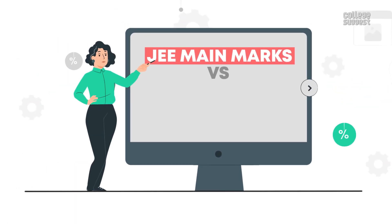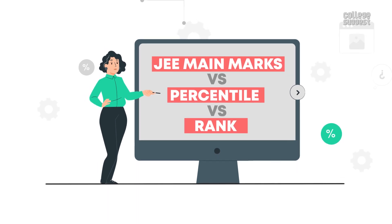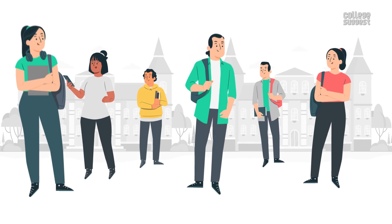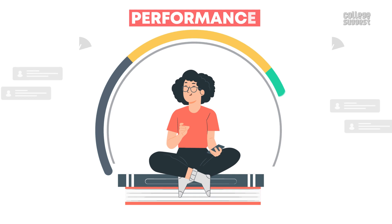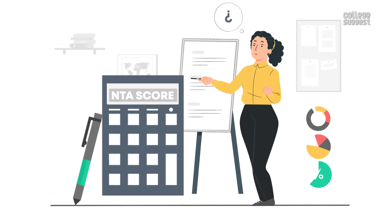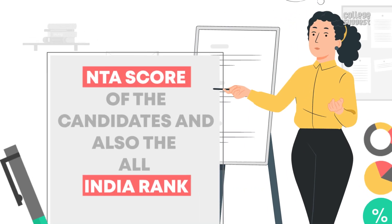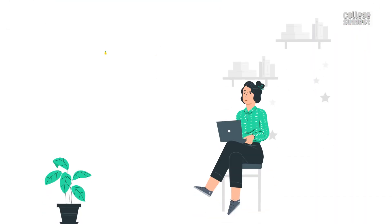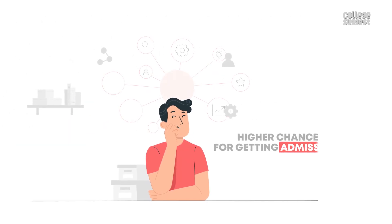Now let's take a look into JEE Main marks versus percentile versus rank. These are based on the following factors: the total number of appeared candidates, difficulty level of the exam, and the overall performance of the candidate. We have seen the formula on how to calculate the percentile scores, which will help in determining the NTA score of the candidates and also the All India rank. Based on the All India rank and the candidate's choice of subject, they can predict in which colleges they have a higher chance of getting admissions.